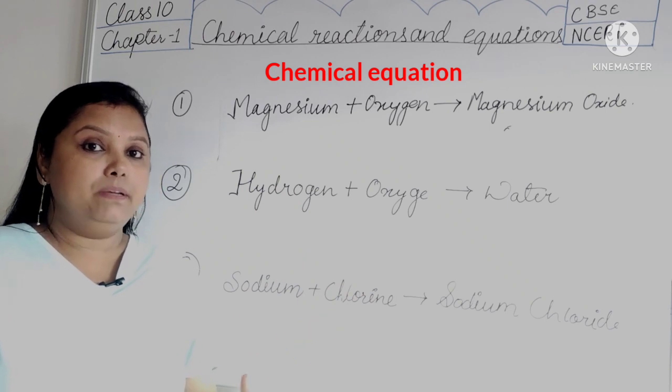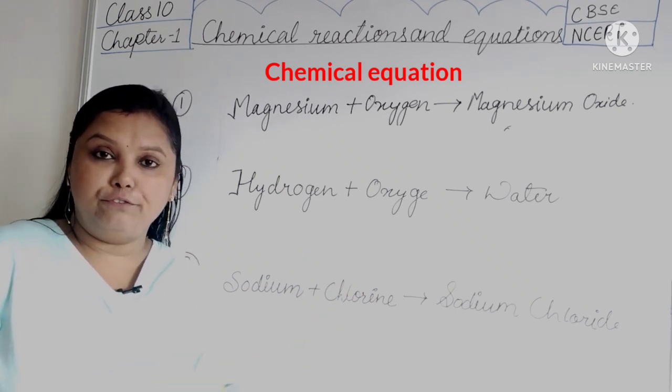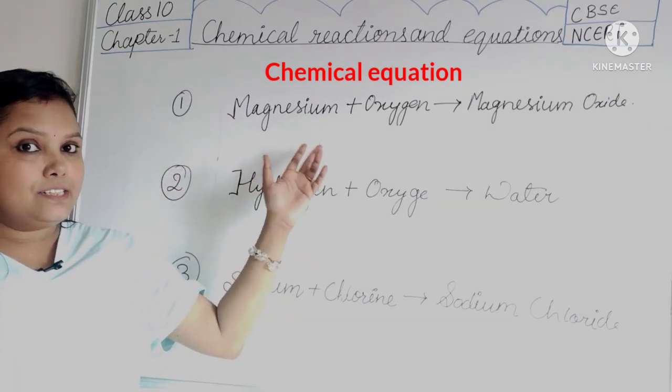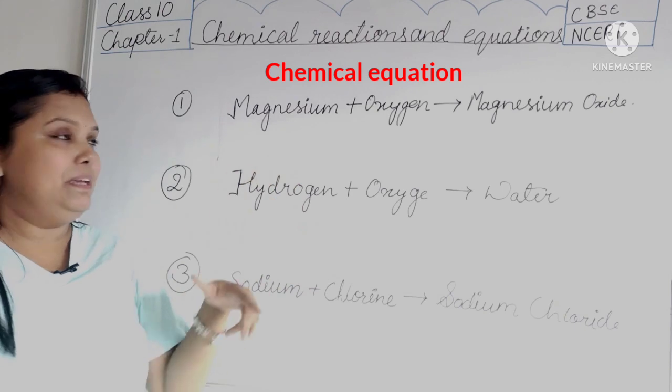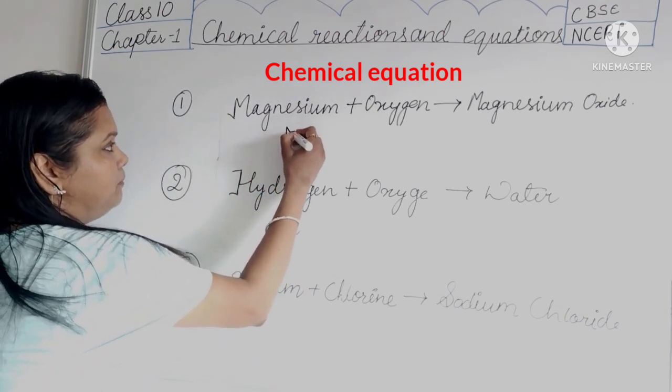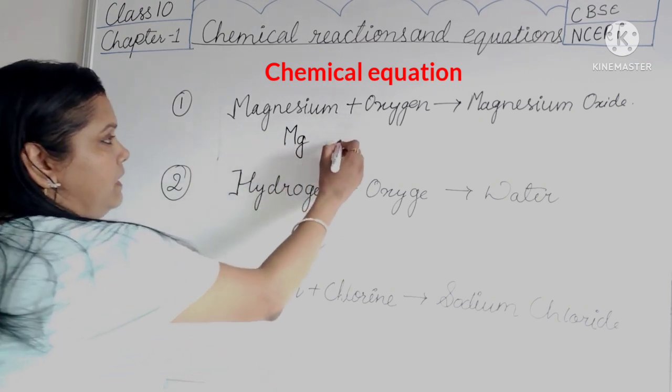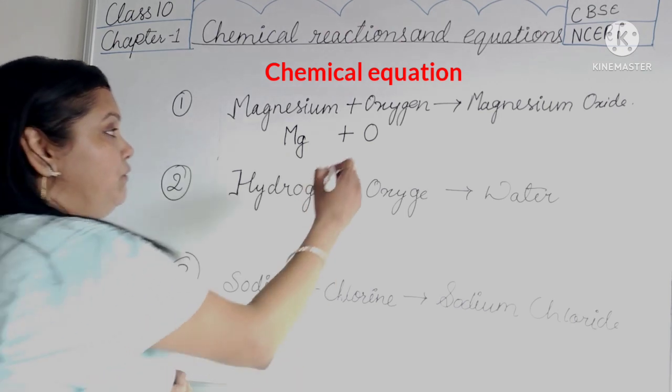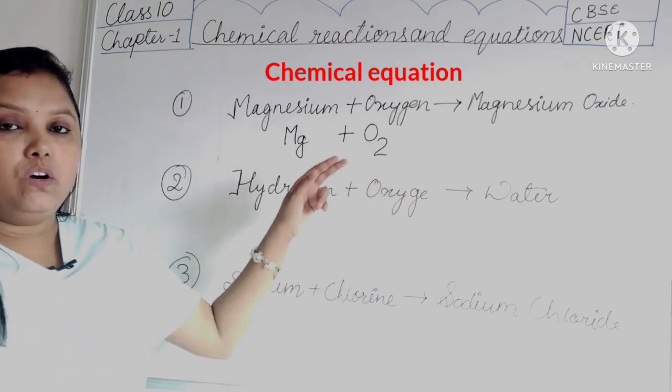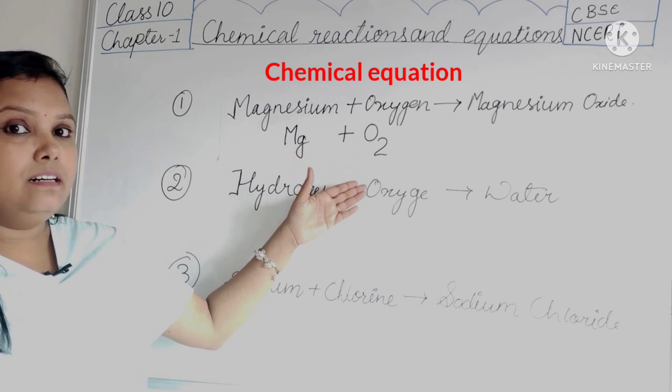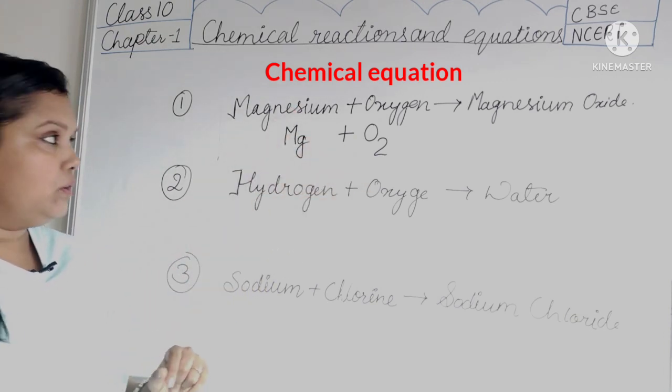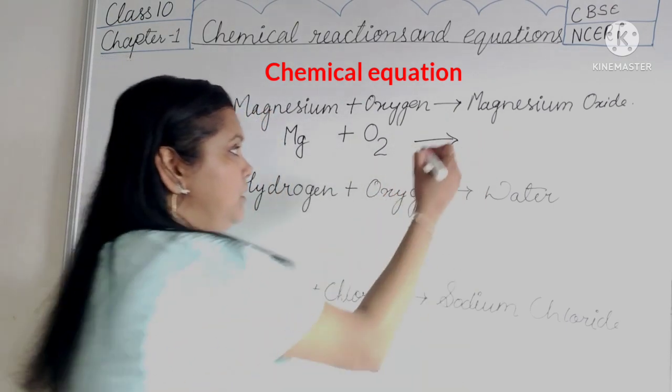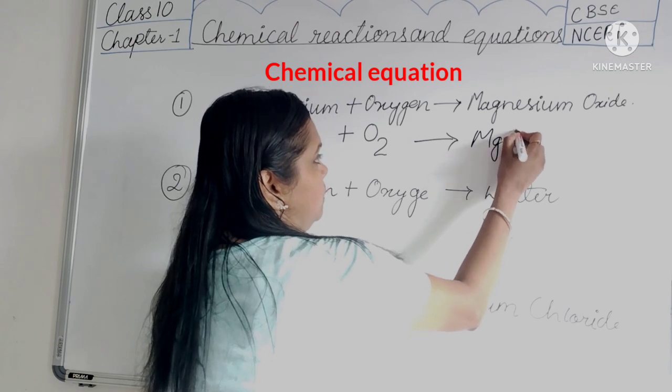These word equations can be written in even more shorter form, and for that we are going to use symbols and formulae. Now we will convert this word equation into chemical equation. So we are going to use the symbol for it. That is Mg and here O. Is it correct? No. We are going to write O2. Why? Because we are going to write the molecular formula of the substances. So it will give magnesium oxide and the formula for it is MgO.